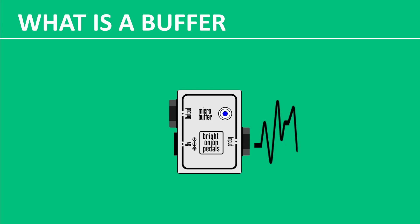In simple terms, a buffer is an amplifier with a gain of 1, which means that the input signal is the same as the output signal. This might sound like a completely useless thing, but it has several very important purposes.